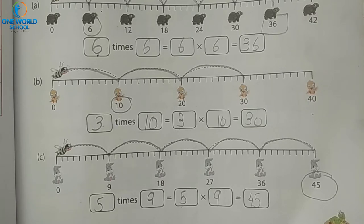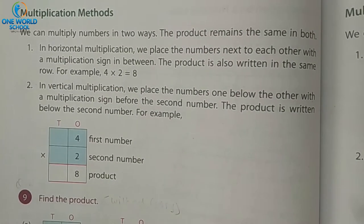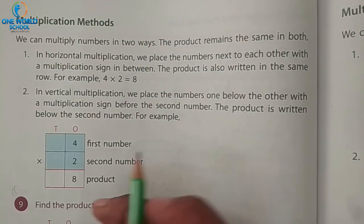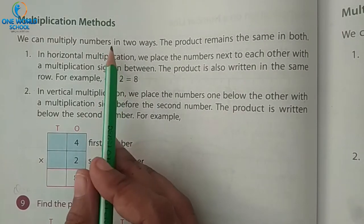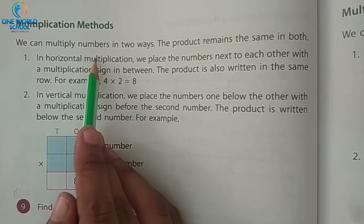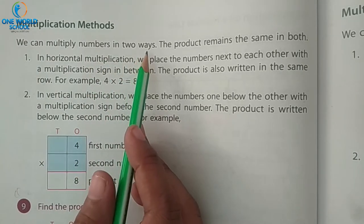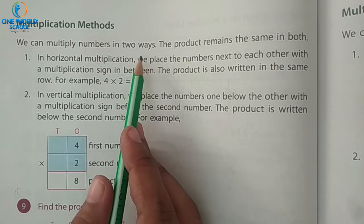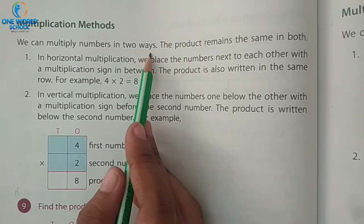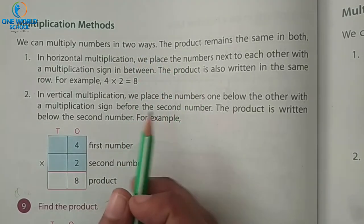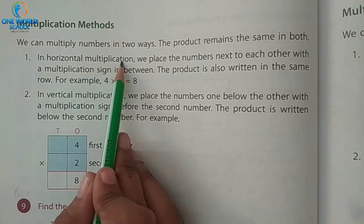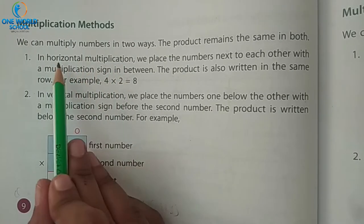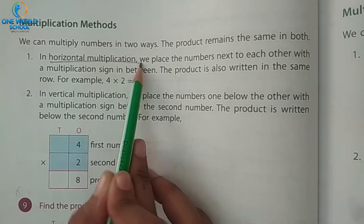Now turn the page. Take page number 98. Next we have to learn the multiplication method. We can multiply the numbers in two ways, and our answer will be the same in each. First is horizontal multiplication.